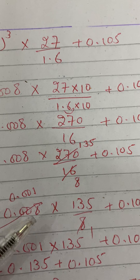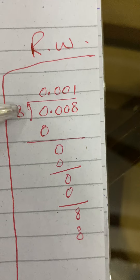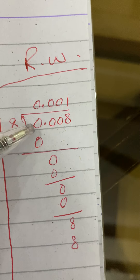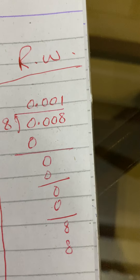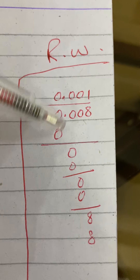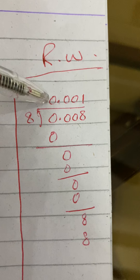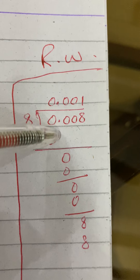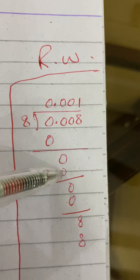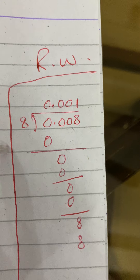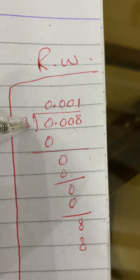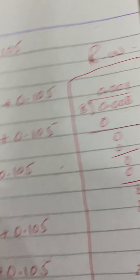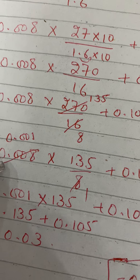Now we divide 0.008 by 8. Whenever you have zeros before a digit you just carry them through. Working it out: 8 into 0 is 0, 8 into 0 is 0, 8 into 0 is 0, and 8 ones are 8. So the answer is 0.001.